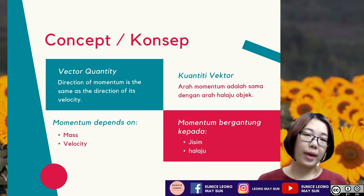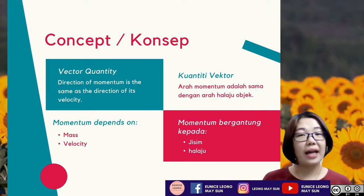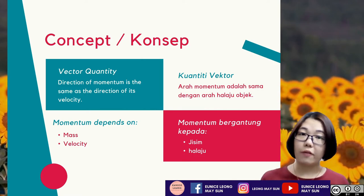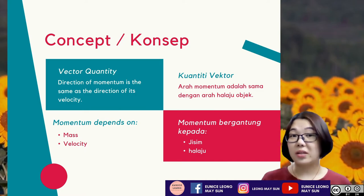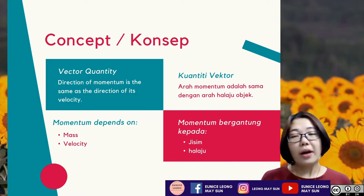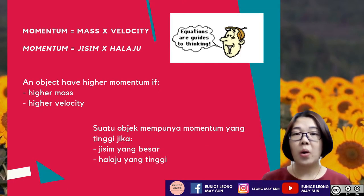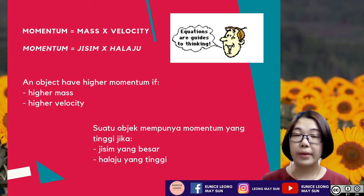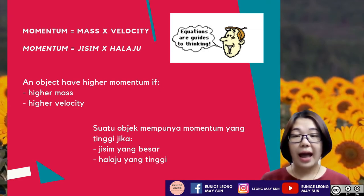The concept of momentum: momentum is a vector quantity. Recalling back, a vector quantity is a physical quantity that has both magnitude and direction. This means that direction matters in momentum. The direction of momentum follows the same direction as velocity — that's why the formula uses velocity and not speed, because velocity is also a vector quantity. From the formula, we also know that momentum depends on mass and velocity. An object has higher momentum if it has higher mass and higher velocity.